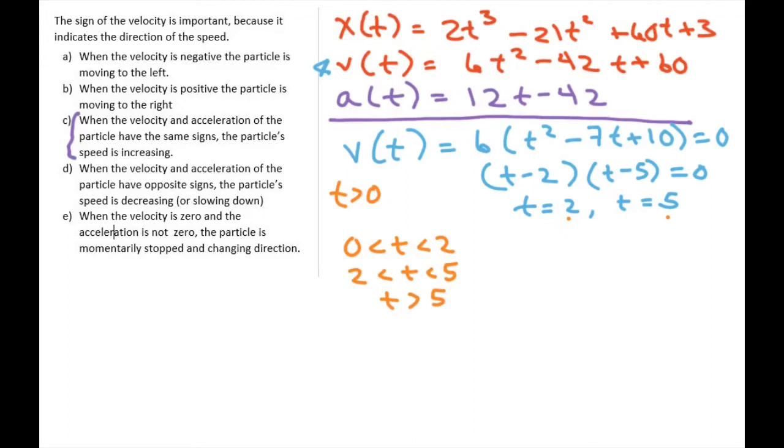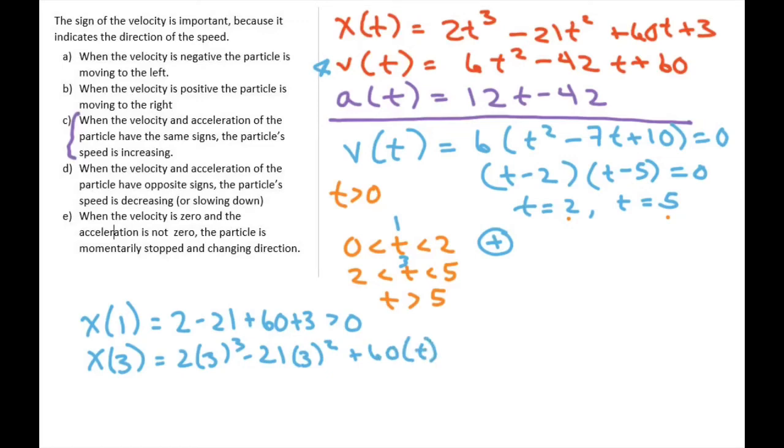And if I pick 1 here, you plug in 1. So I'll do that. So x of 1. So be 2 minus 21 plus 60 plus 3. And you can kind of just tell by looking that that's going to be positive. So it's positive here on this interval. And I'll pick 3 for this one. So x of 3 is going to be 2 times 3 cubed minus 21 times 3 squared plus 60 times 3 plus 3. And when you do that, you're going to see this is negative.